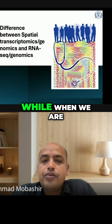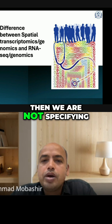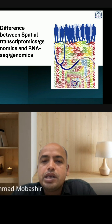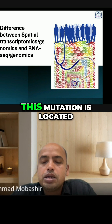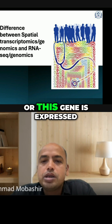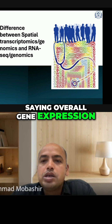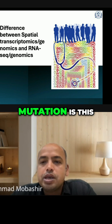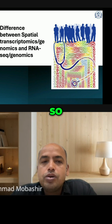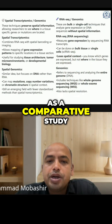When we are talking about genomics, we are not specifying in which tissue or in which cell this mutation is located or this gene is expressed. We are just saying overall gene expression is this, or overall mutation is this.